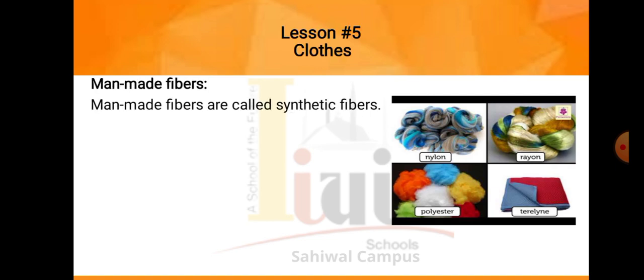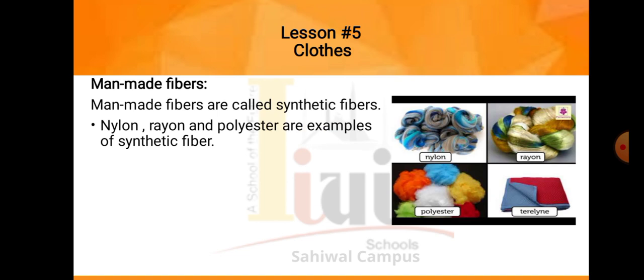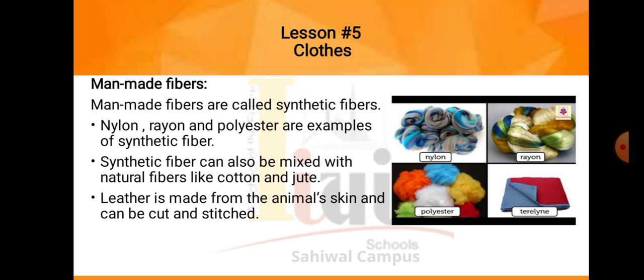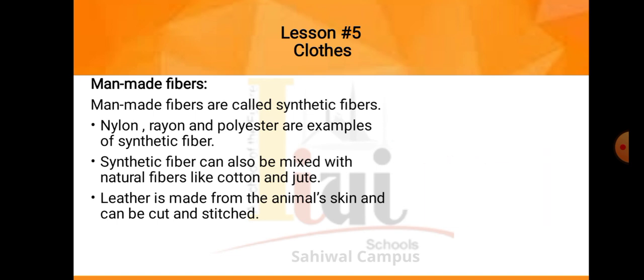Man-made fibers — ab jo man-made fibers hai, hum ne natural fibers ki baat ki, jo hum natural cheezon se gain kertay hai, aur ab hum baat karengy man-made fibers ki, jo insaan ne khud binaay hai. Man-made fibers are called synthetic fibers. Nylon, rayon and polyester are examples of synthetic fiber. Yeh saree jo hai — nylon, rayon, polyester — yeh saree man-made fibers hai. Synthetic fiber can also be mixed with natural fibers like cotton and jute. Leather is made from animal skin and can be cut and stitched. Leather jo hai, wo animal ki skin se banayi jati hai, aur usko hum log stitch bhi ker saktay hai, cut bhi ker saktay hai, matlab uski jackets waghaira banti hai.